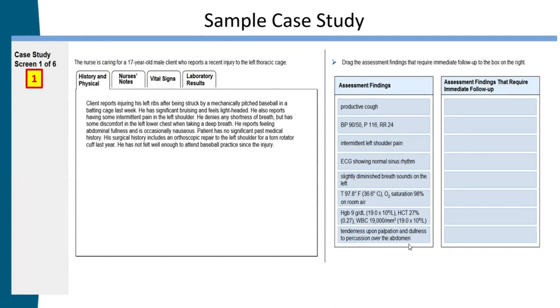That 'screen one of six' indicator is a 'you are here' marker. As candidates progress through the case study, they'll eventually see things like 'screen five of six,' so they'll always know where they are.